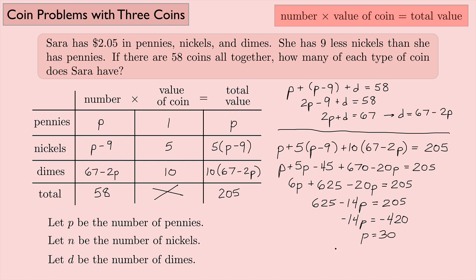To get the number of nickels, if we look back up here, the number of nickels was the number of pennies minus 9. So that's going to be 30 minus 9, and 30 minus 9 is 21. And if I want to get the number of dimes, that's going to be 67 minus 2P. So that's 67 minus 2 times 30. If we calculate that, we end up getting 7.